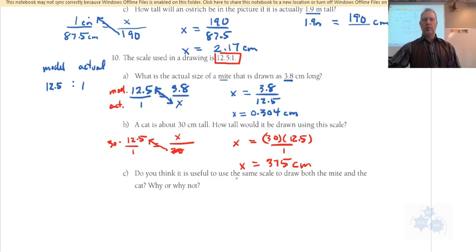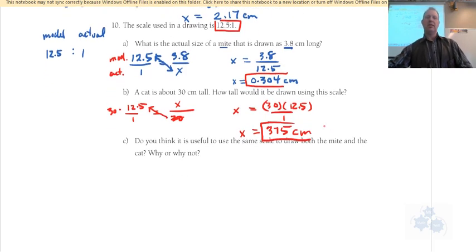So do you think that it's useful to use the same scale to draw both the mite and the cat? So the mite is going to be this on the scale, and the cat is going to be this. That's almost 4 meters, right? That's like the width of the classroom here. So to draw that, probably not a good idea to use the same scale, right? So the cat would be way too big, and the mite would be way too small to draw. Judging from these.